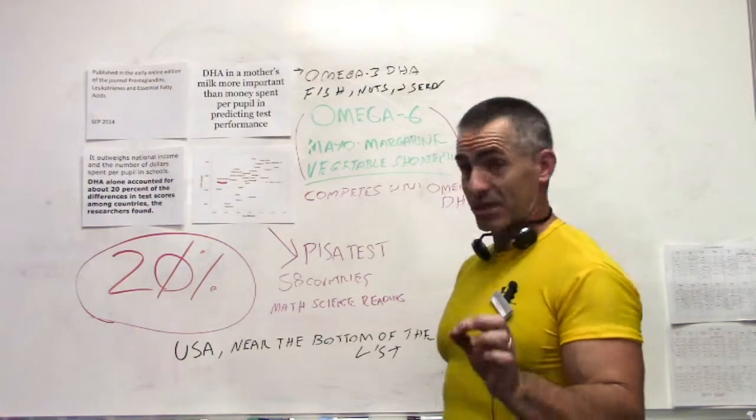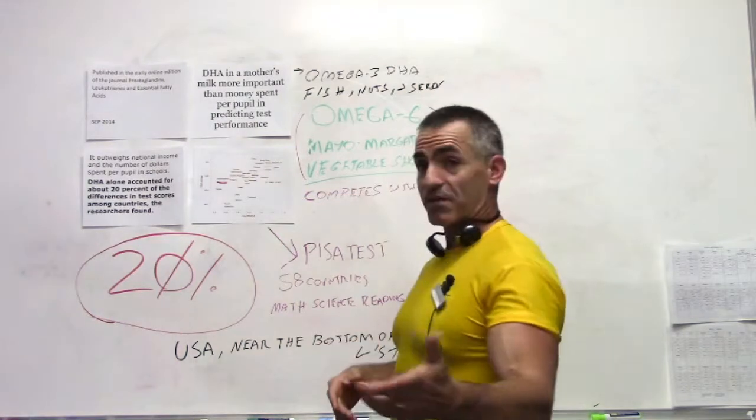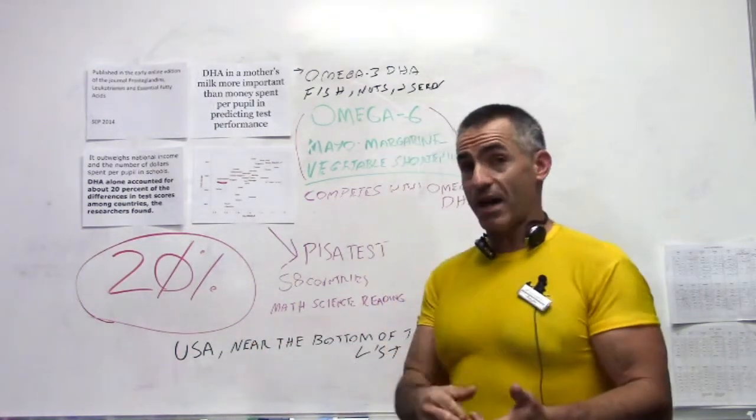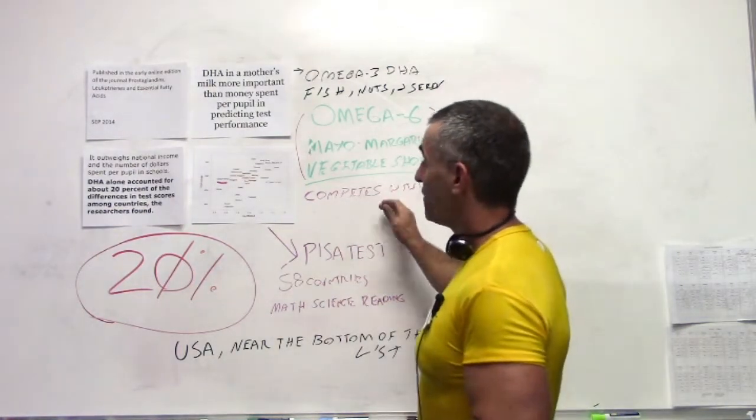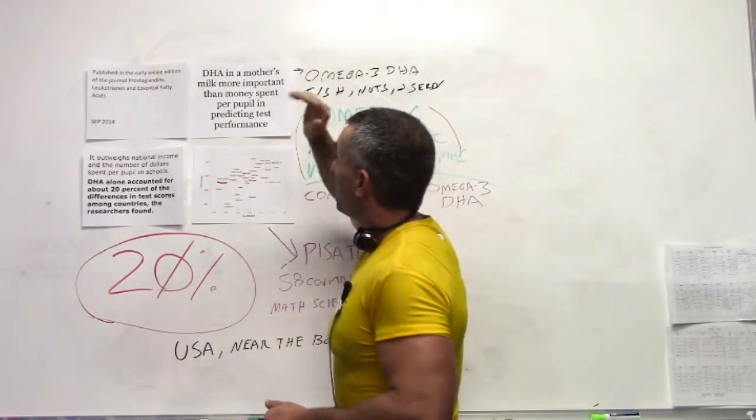Now, why they discovered that was this. They did a test called the PISA test. The PISA test is an international test which is done every so often. It compares 58 countries in regards to math, science, and reading.